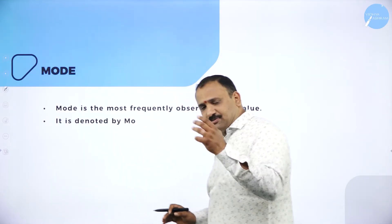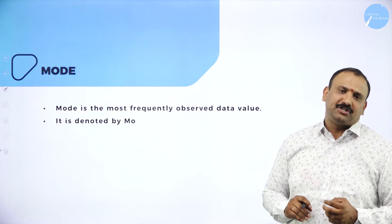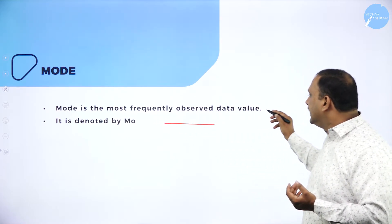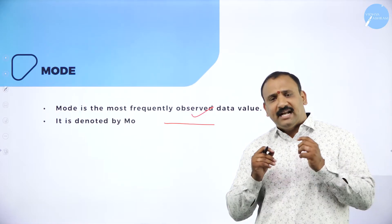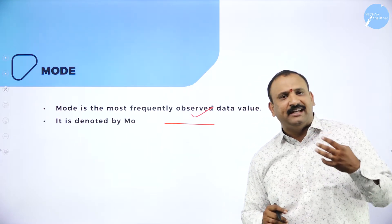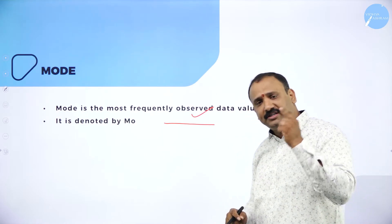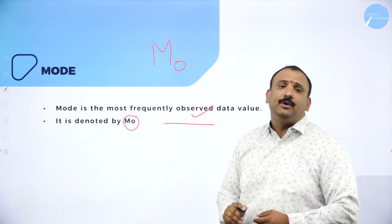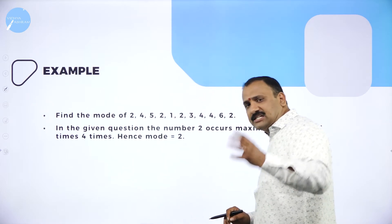Mode is the most interesting topic when it comes to measures of central tendency. Mode is the most frequently observed data value — a particular value that is repeated again and again in statistics. Whether in marks, ranks, or age, certain common values repeat, and that is where we use the statistical function called mode. It is denoted by Mo.